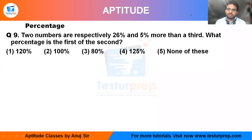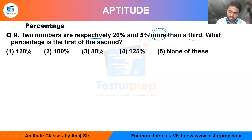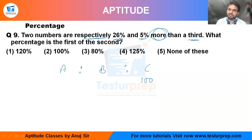Welcome back. Next question is question number nine on percentages. In this question, two numbers are respectively 26 and 5 percent more than a third number. Let me take three numbers. The total value depends on the third number, so let it be 100, because we are dealing with percentages. You can let it be any value, but you should choose a value that is easy to calculate.